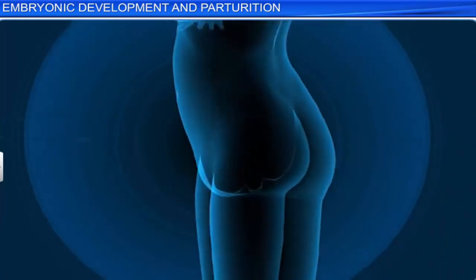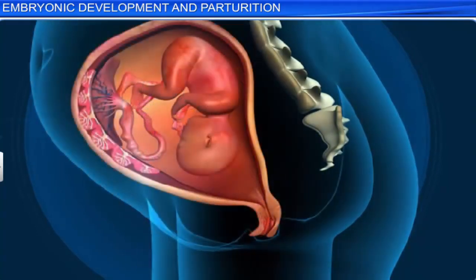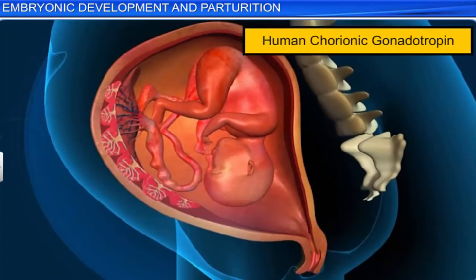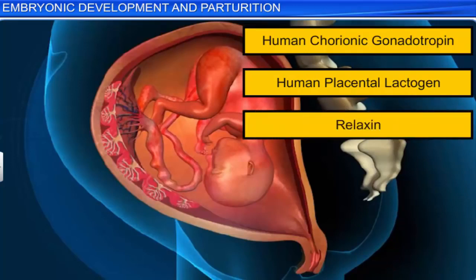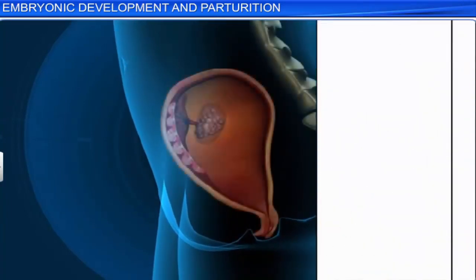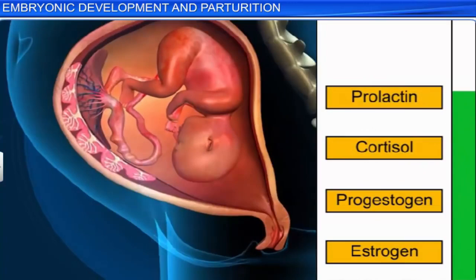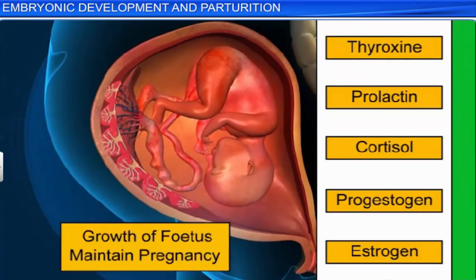While the fetus undergoes several developmental changes, the mother's body too is undergoing several hormonal changes. The ovary, for example, starts secreting a hormone called relaxin. Likewise, the placenta starts secreting hormones such as human chorionic gonadotropin (HCG) and human placental lactogen (HPL). HCG and relaxin are secreted only when a woman is pregnant. Apart from these hormones, the levels of estrogen, progestogen, cortisol, prolactin, and thyroxine also rise rapidly in a pregnant woman's body. These hormones support the growth of the fetus and maintain the pregnancy.